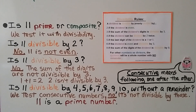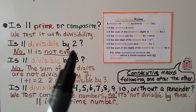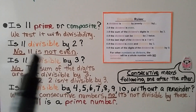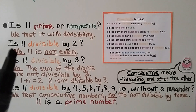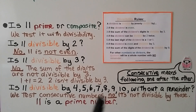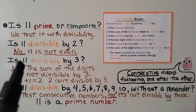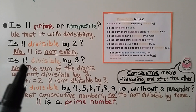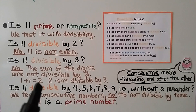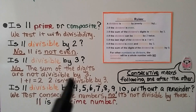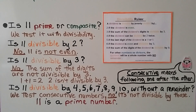So is 11 prime or composite? We test it with divisibility. Is 11 divisible by 2? The rule is: divisible by 2 if the number is even. Well, 11 is not even, so no. Is it divisible by 3? It's divisible by 3 if the sum of the digits is divisible by 3. For 11, we add 1 plus 1 to get 2, and 2 isn't divisible by 3. If this is confusing, go back to video 5.2 for the divisibility rules.